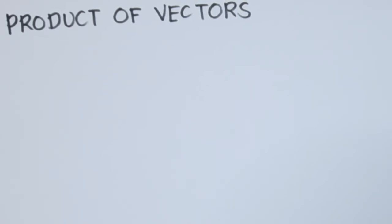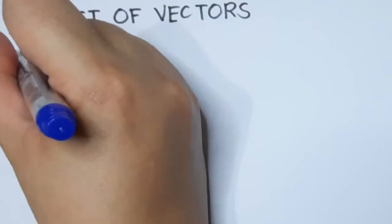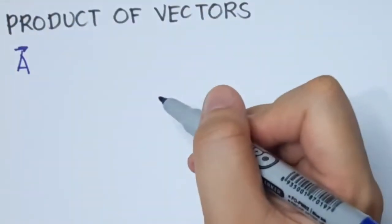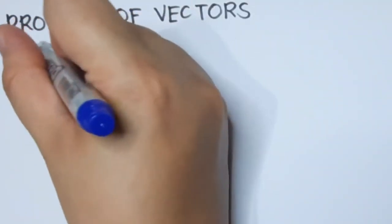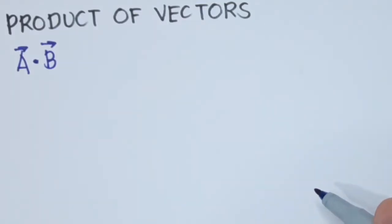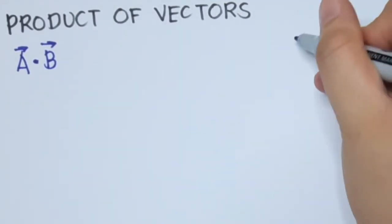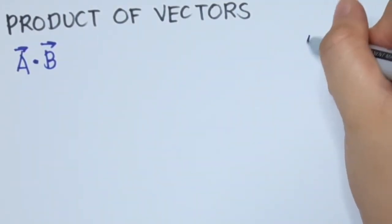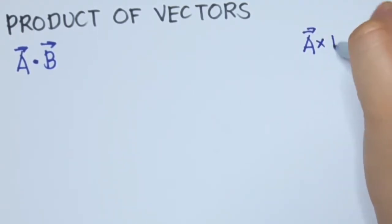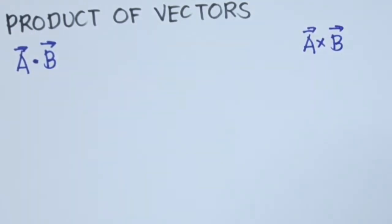Good day everyone. If you go back to my previous lecture, I discussed there how to add unit vectors and how to get the difference of two unit vectors. Now we will get the product of vectors. There are two different products: vector a times vector b, which we call the dot product, and a cross b, which we call the cross product.